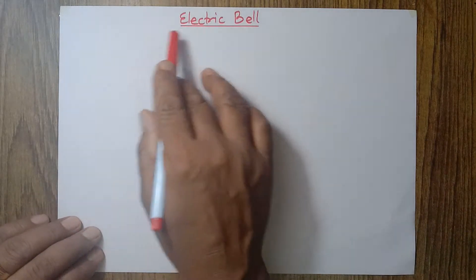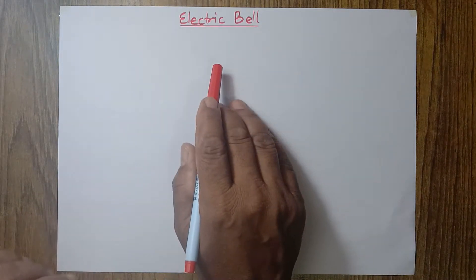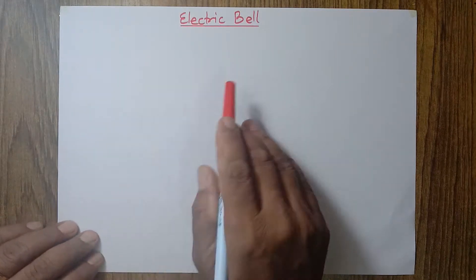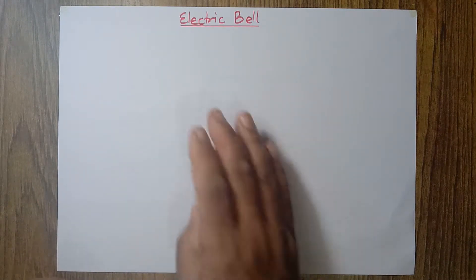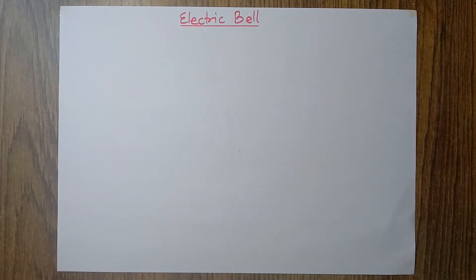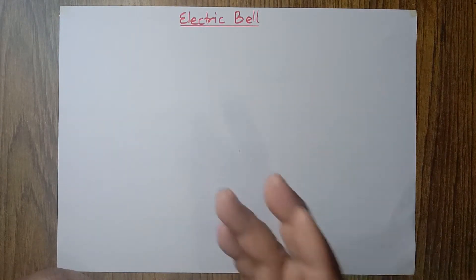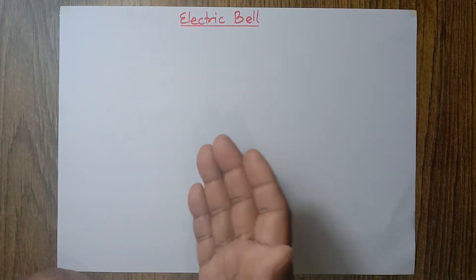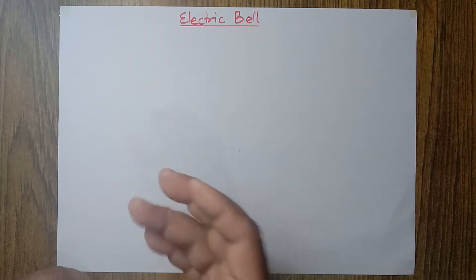Among them, the electric bell is one of the most important devices in which an electromagnet is used. I want to show how it is made with a diagram. If you are asked to draw a diagram in an examination, you can draw this diagram. And I will also explain its working principle.